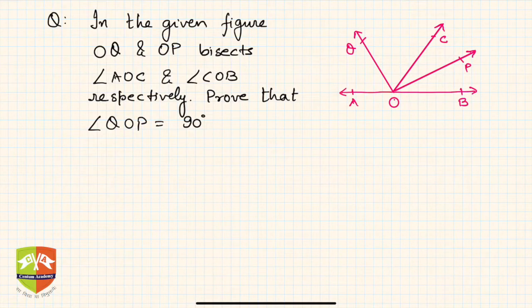Welcome friends to another problem-solving session. In this question, it's given that OQ bisects angle AOC and OP bisects angle COB. You have to prove that angle QOP is a right angle.